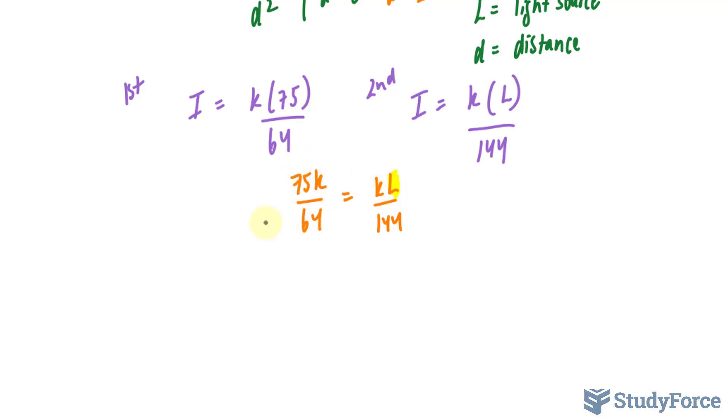How do we do that? Well you'll notice that there's one term on the left side and one term on the right side, and there's a K on both sides. This means we can cancel out the K's. In case you're curious as to why, pretend we divided both sides by K - the K's would cancel out. This leaves us with 75 over 64 equals L over 144.